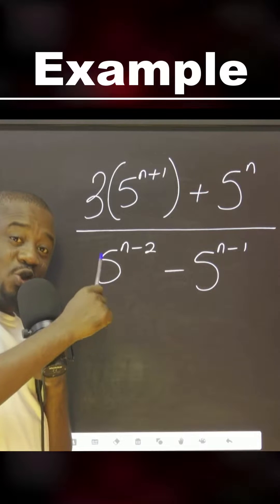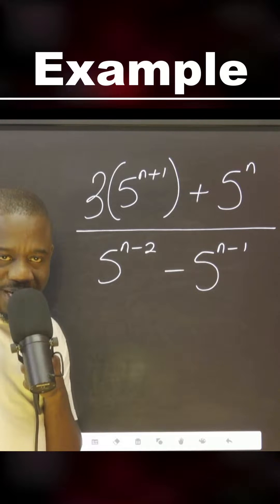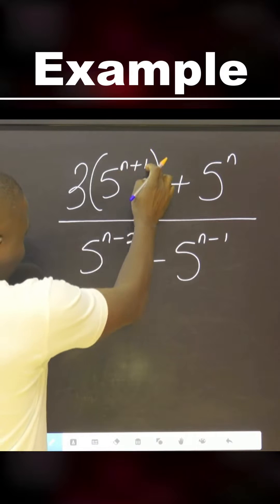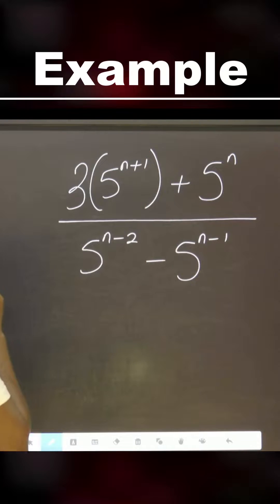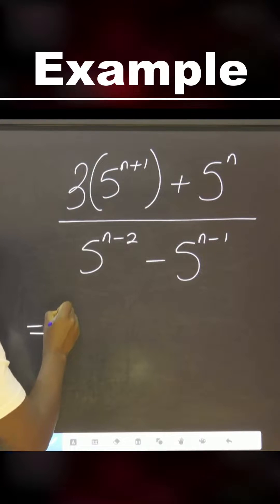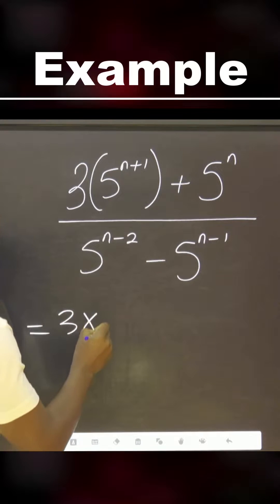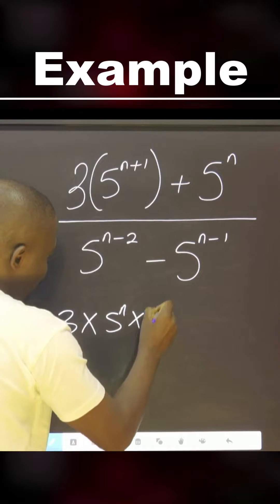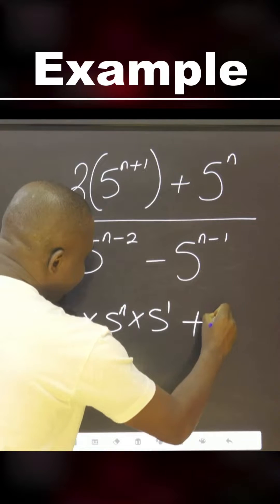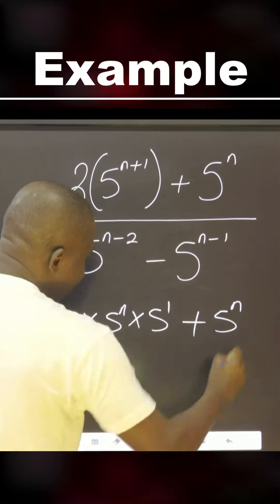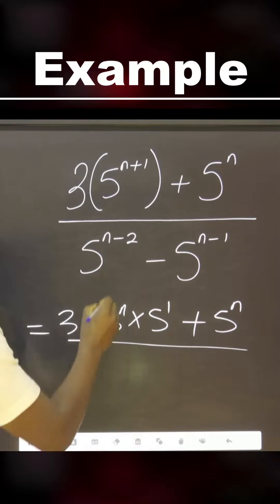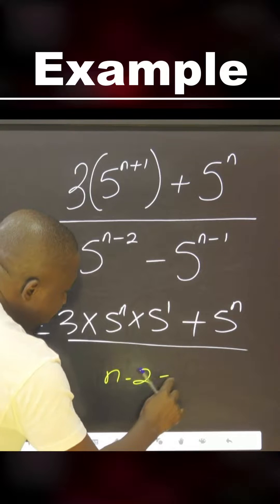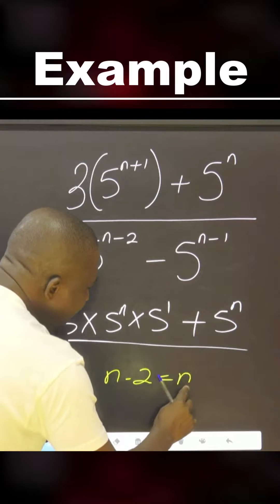Look at this — we are asked to solve this. Break it down, no panic. What is the meaning of this? It simply means equal to 3 multiplied by 5 raised to power n, multiplied by 5 raised to power 1, plus 5 raised to power n, all over n minus 2, which also means n plus minus 2.